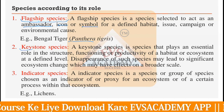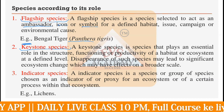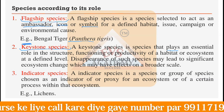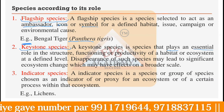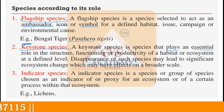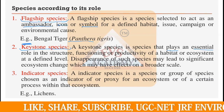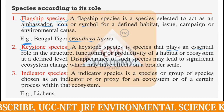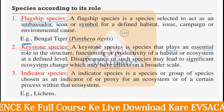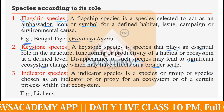Next, keystone species. Keystone means having a peculiar or very important character. Keystone species is a species that plays an essential role in the structure, functioning, or productivity of a habitat or ecosystem at a defined level. Without that species, there would be multiple problems and the ecosystem may not survive. The disappearance of such species may lead to significant ecosystem change which may have effects on a broader scale. All species playing such a role can be called keystone species.